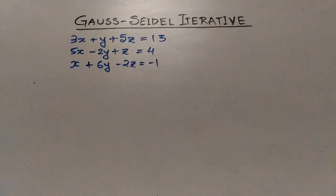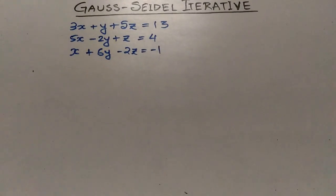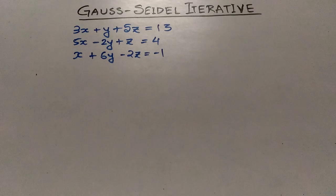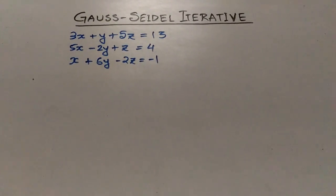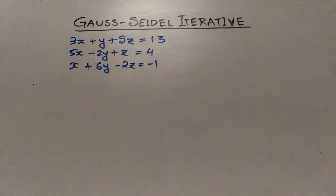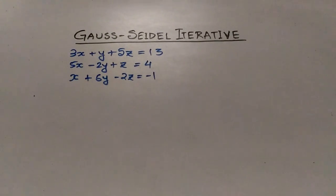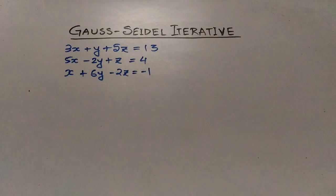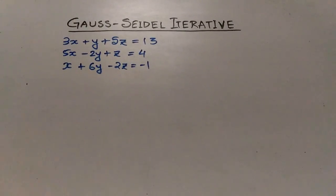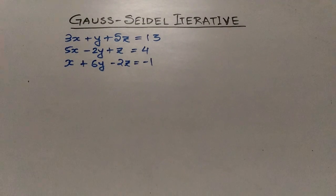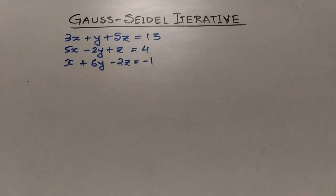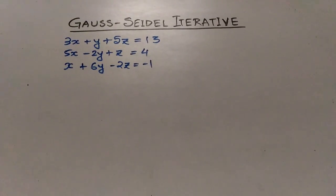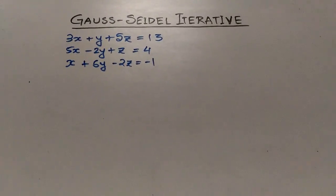The example given has three equations: 3x + y + 5z = 13, 5x − 2y + z = 4, and x + 6y − 2z = −1. Now, why do I consider this method to be difficult? It is not a lengthy process at all — the problem is very short and crisp — but the method or process to solve problems using it is rather very difficult to grasp, and you need to pay close attention.